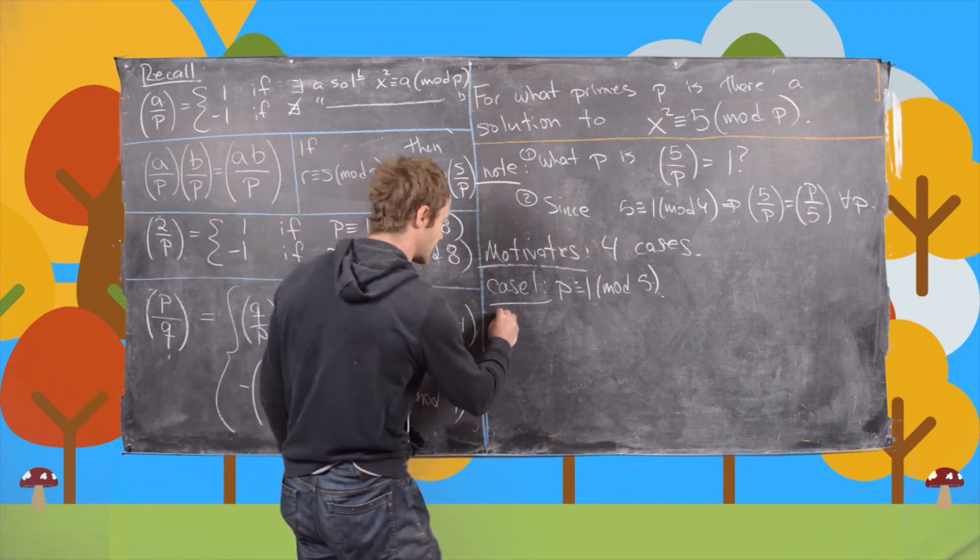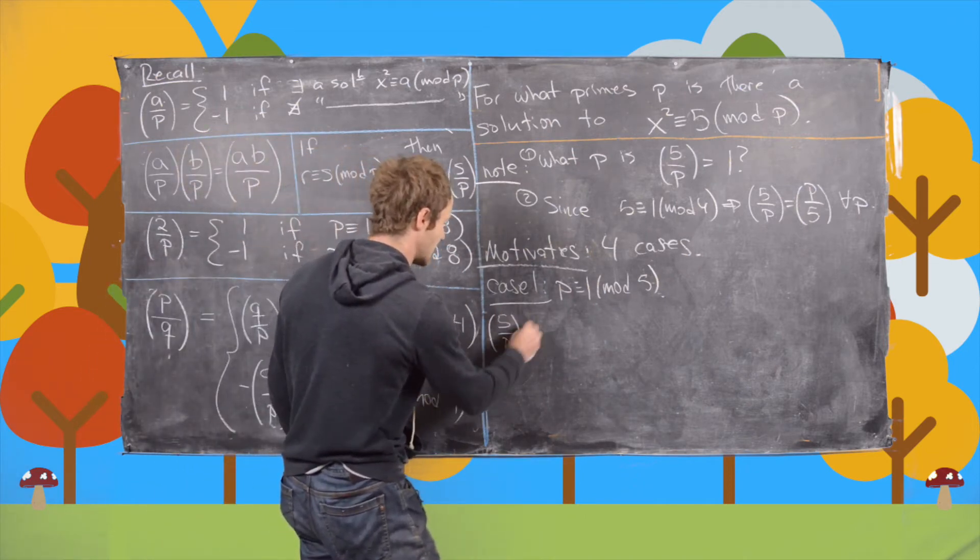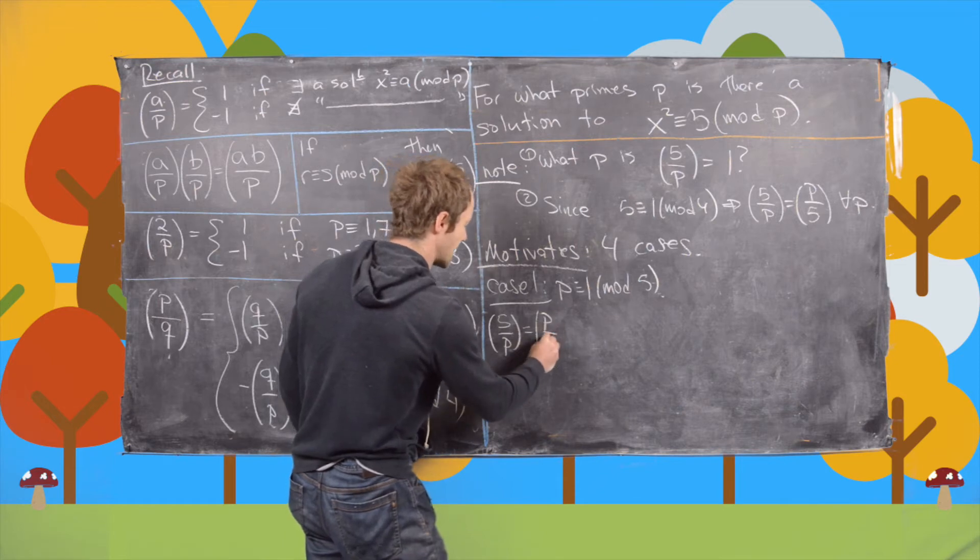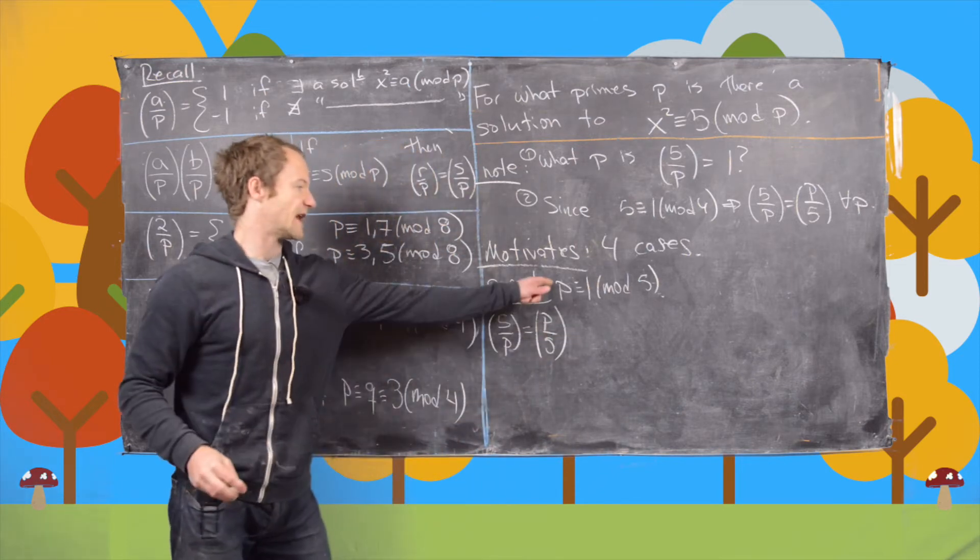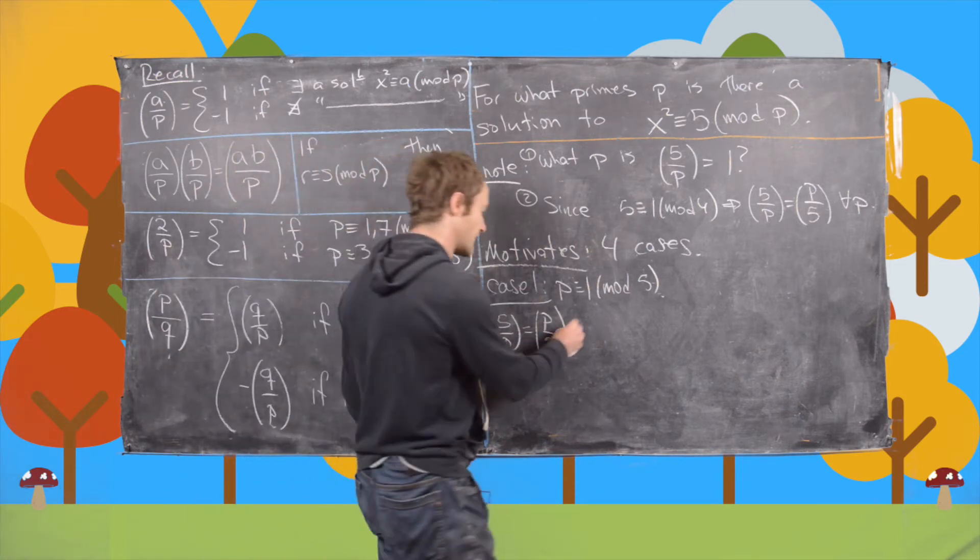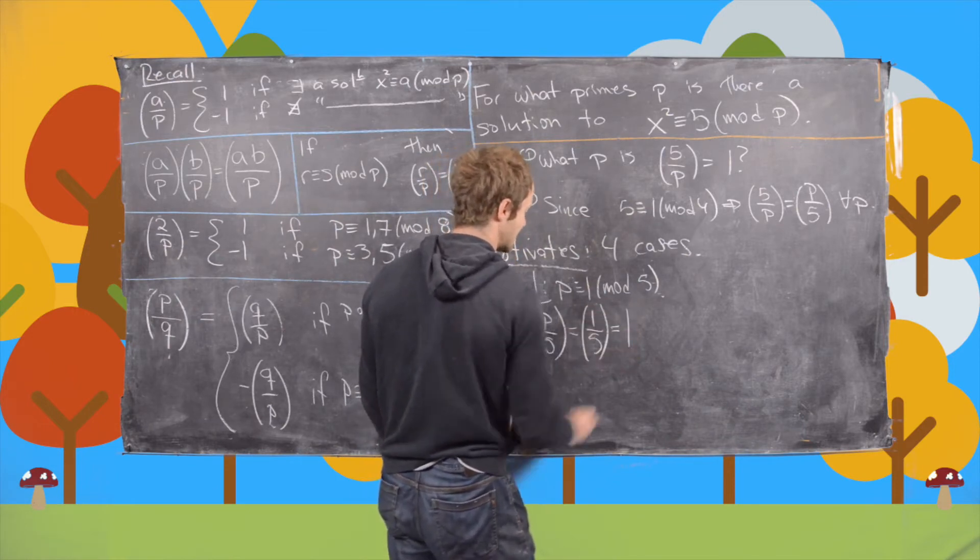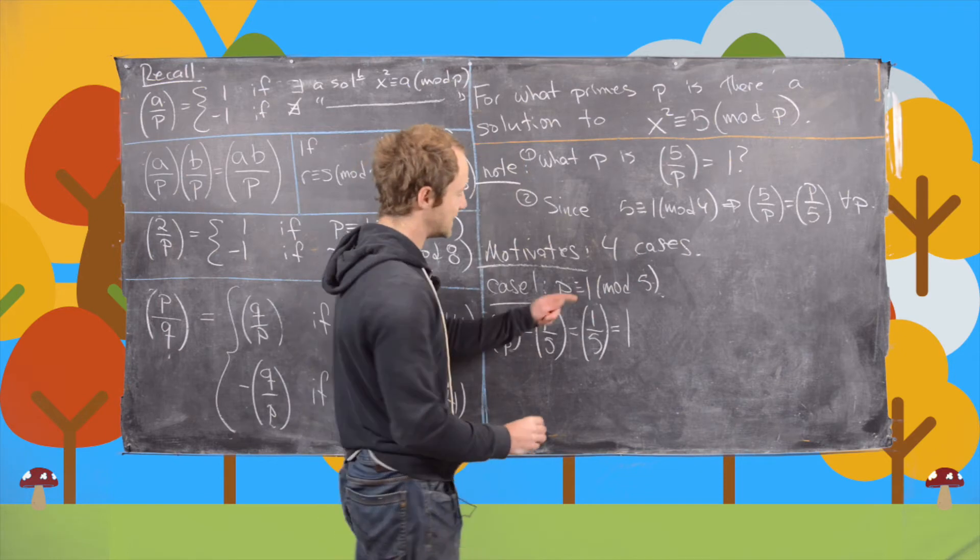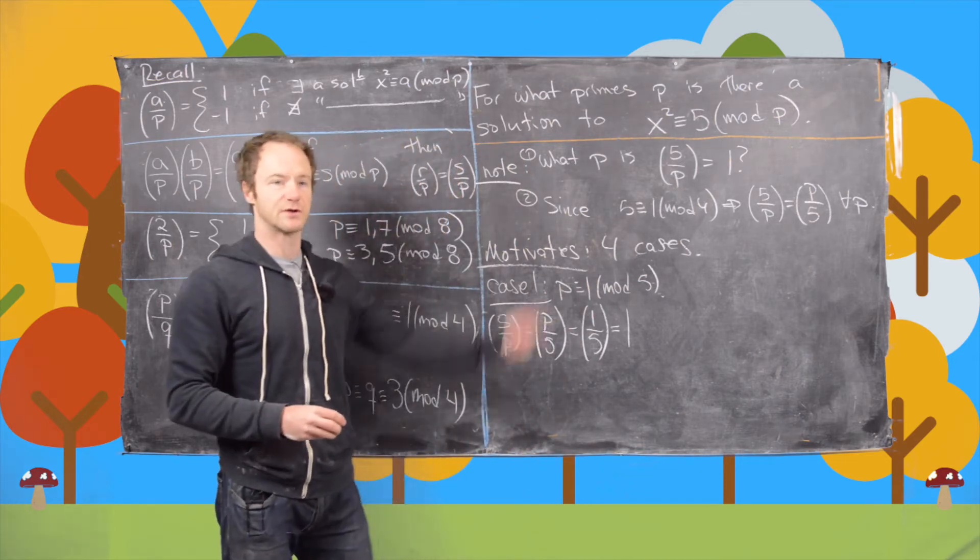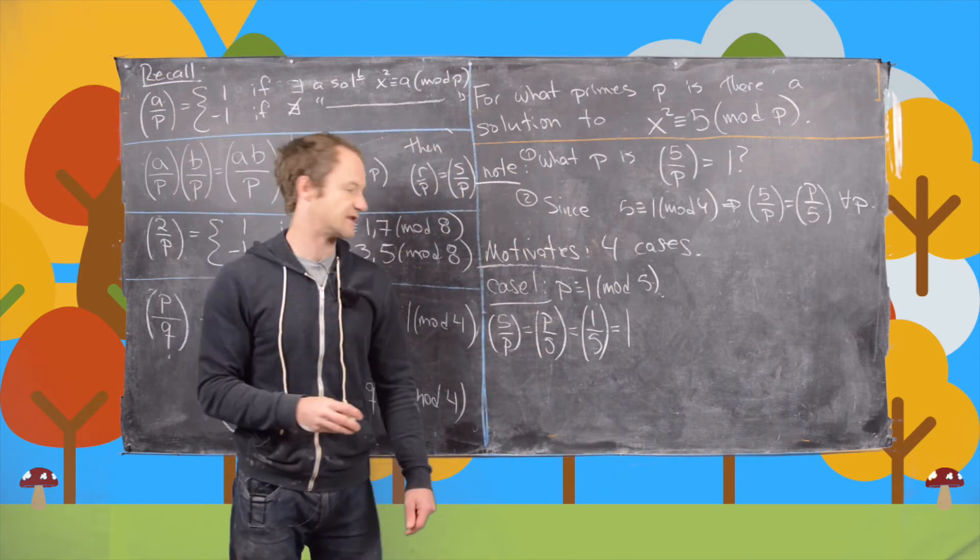So if p is congruent to 1 mod 5, we have 5 by p is p by 5. But now since p is congruent to 1 mod 5, we get 1 by 5. But then that's obviously equal to 1. And that's because 1 squared is equal to 1. There's obviously a solution to this equation.